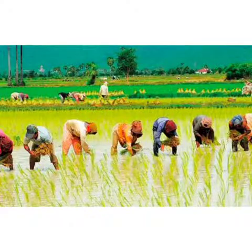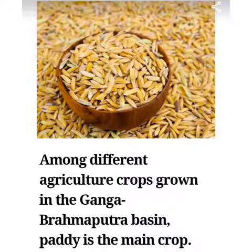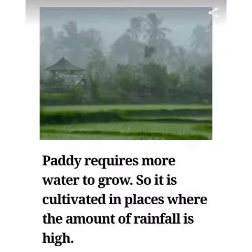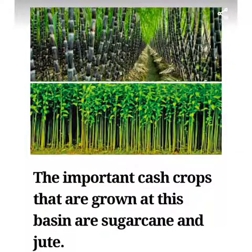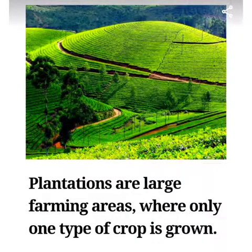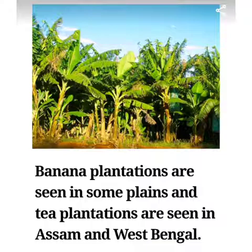People do agriculture here. Among different crops grown in the Ganga-Brahmaputra plains, paddy is the main crop. Paddy requires more water to grow and is cultivated in places where rainfall is adequate. Other crops include wheat, maize, gram, and millets. Important cash crops grown in these basins are sugarcane and jute. Banana plantations are seen in some plains and tea plantations are seen in Assam and West Bengal. Silk is produced through the cultivation of silkworms in parts of Bihar and Assam.